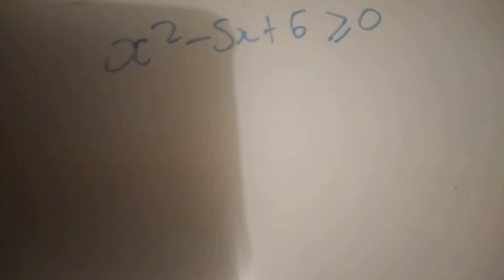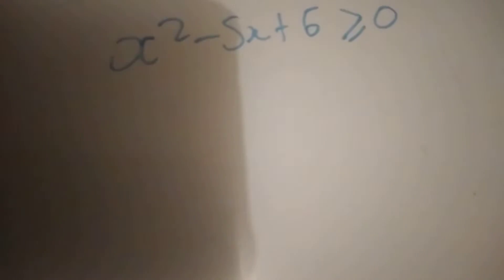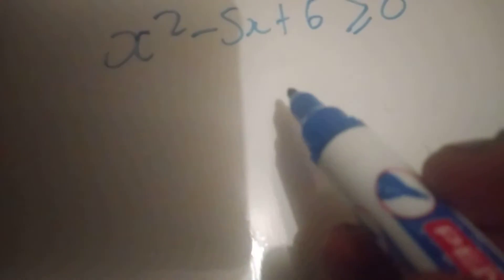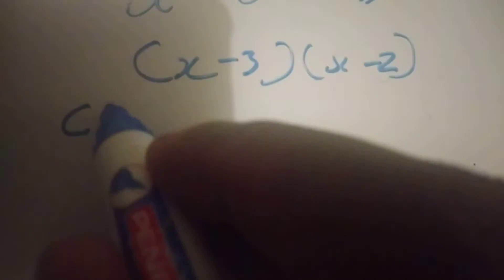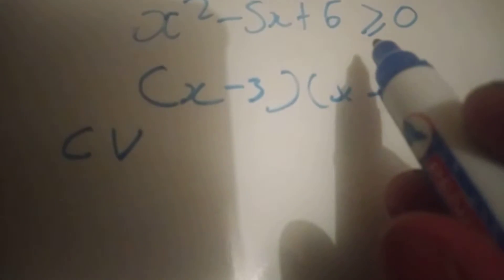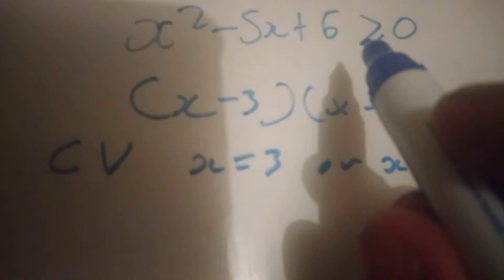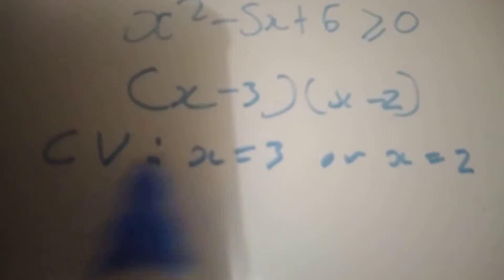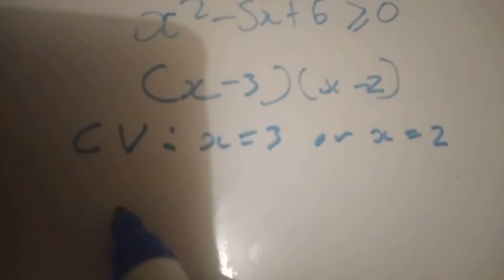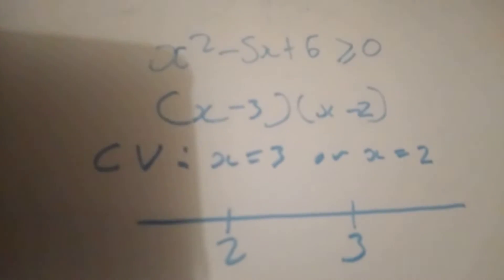This video is on how to solve inequalities using interval notation. When solving inequalities, we pretend to solve them the same way we would if it were equals to zero. So the bracket will be (x - 3)(x - 2). Now here, I want to note critical values — it's not exactly the same as when it equals zero. When it equals zero we just say x = 3 or x = 2, but with inequalities we have to say critical values, because these values tell us when it equals zero, and we need to find when it's greater than zero. From there, you draw your number line with the smaller value first and the larger value after.